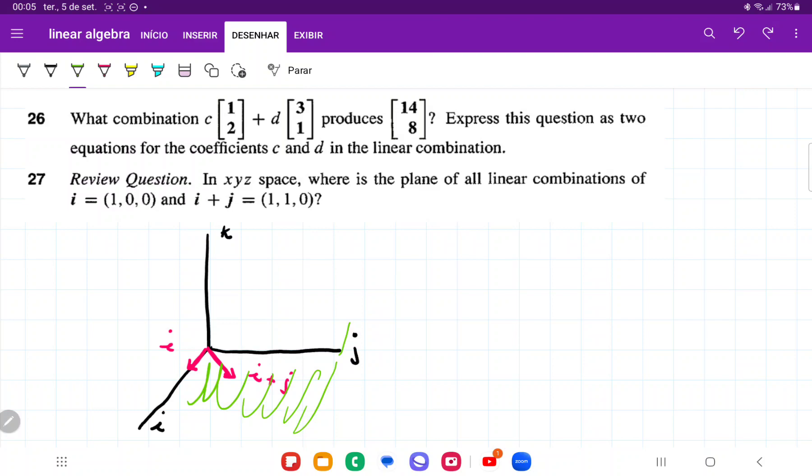So the reason that it's stuck in that plane is because we don't have the k component. Neither i nor i plus j, we can see here that the third entry, this is empty, right? So it means that we're going to be forever stuck in this ij plane, and we can't ever move up in the k direction or down in the minus k direction.